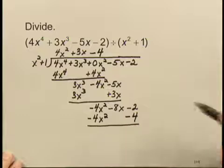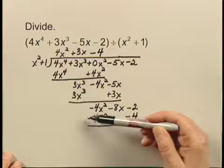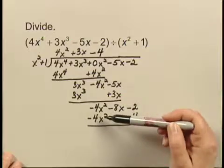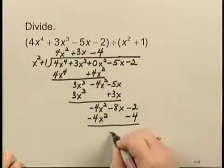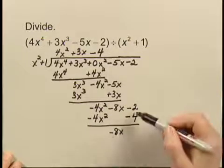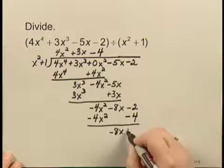And I subtract. -4x^2 - (-4x^2) is 0. -8x - 0 is -8x. -2 - (-4) is +2.